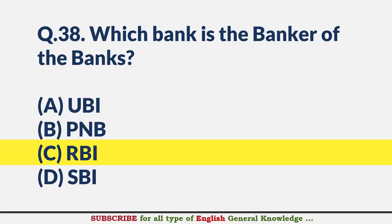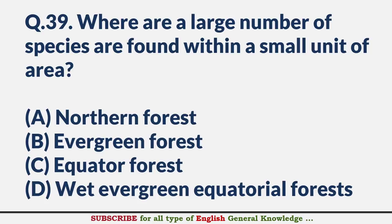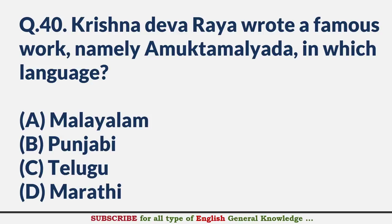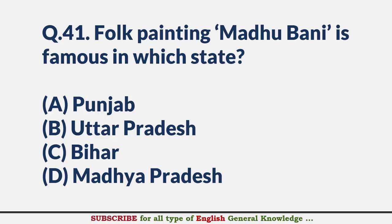Where are a large number of species found within a small unit of area? — Answer D: Wet evergreen equatorial forest. Krishna Deva Raya wrote a famous work, namely Amuktamalyada, in which language? — Answer C: Telugu. Folk painting Madhubani is famous in which state? — Answer C: Bihar.